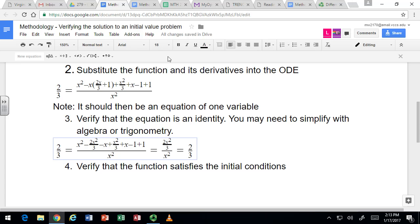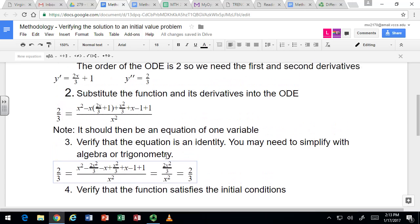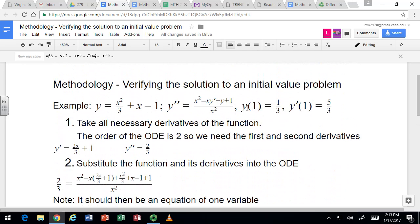Zero equals zero. One equals one. Two thirds equals two thirds, which is what you get at the end of the day with an algebraic equation, right? When you put the number in, at the end of the day, you should get number equals number. So we know that function is a solution to that differential equation, but not necessarily the initial value problem, which bundles the equation with these initial conditions.